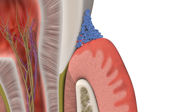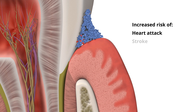Chronic periodontitis is a destructive gum disease which affects the tissues that support the teeth. It has been linked with an increased risk of heart attack, stroke and certain cancers.